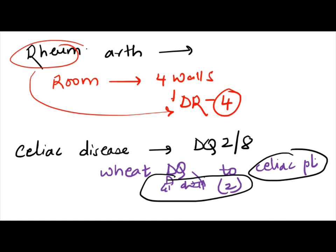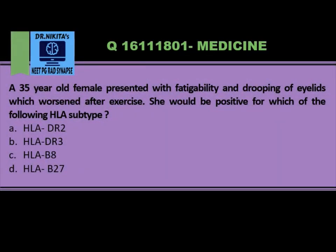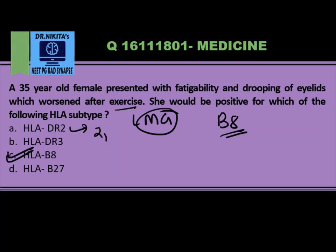These are the important HLA subtypes and their associations — an exhaustive but important list. If you revise it frequently, you will remember it easily. Coming back to our question: this was myasthenia gravis. From our mnemonic MAGIC (B8), myasthenia gravis is associated with HLA-B8. To recap: DR2/DR3 for SLE (butter-free), DR3/DR4 for diabetes (sugar-free), and B27 for spondyloarthropathies (PAIR).